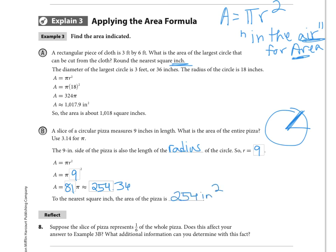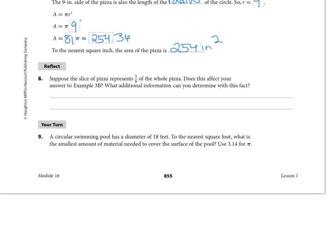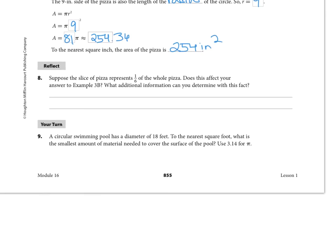So continuing for Your Turn here at the bottom of the page, you are going to take the idea of a swimming pool and we want to know how much material is going to be needed to cover the surface of the pool. That is again another area formula, and make sure that you are using the substitution 3.14 when it comes time to put pi in and find your final answer.